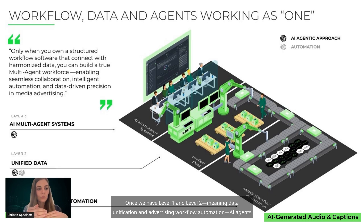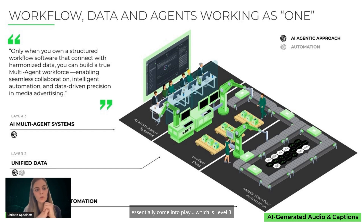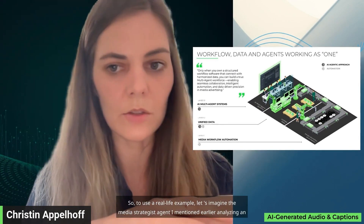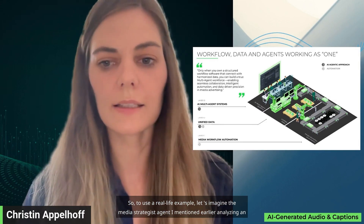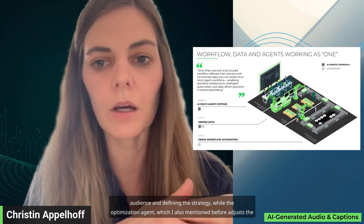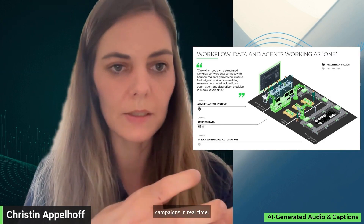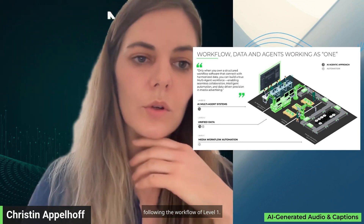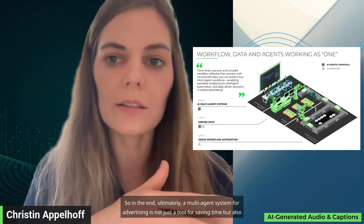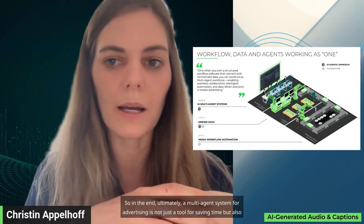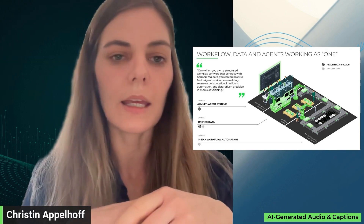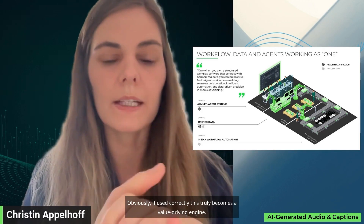Once we have level 1 — advertising workflow automation — and level 2 — data unification — AI agents come into play at level 3. For example, the media strategist agent analyzes an audience and defines strategy, while the optimization agent adjusts campaigns in real time, collaborating using the data from level 2 and following the workflow of level 1. Ultimately, a multi-agent system for advertising is not just a tool for saving time but also for reducing costs and making media management more efficient and streamlined — if used correctly, it becomes a true value-driving engine.